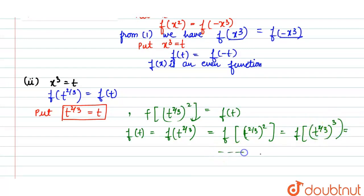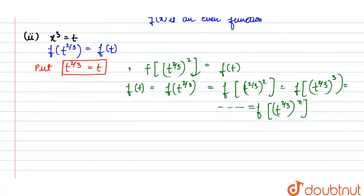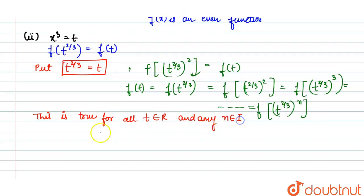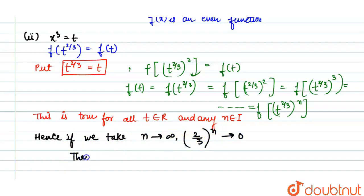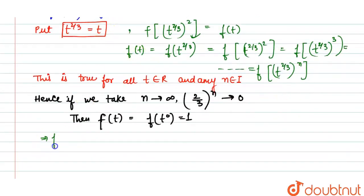यह true है for all t ∈ ℝ and any integer n। Hence, if we take n → ∞, then (2/3)^n → 0। So f(t) = f(t^0) = f(1), which means f(t) is a constant function। So we can conclude that f(x) is continuous and it is differentiable everywhere.